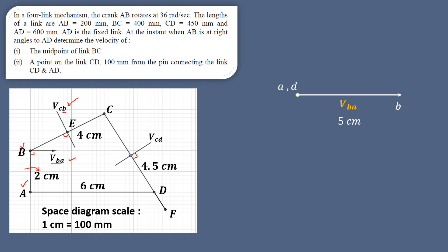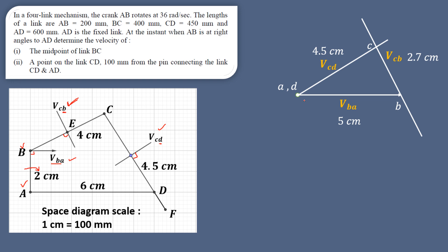The next vector is velocity of C with respect to B. From point B on the velocity diagram, draw a line parallel to BC from the space diagram. Then for velocity of C with respect to D — since D is known — from D draw a line parallel to the CD direction, whose magnitude and direction are unknown. The intersection of these two lines gives point C. Velocity CB measures 2.7 cm and velocity CD measures 4.5 cm.